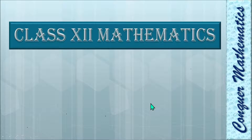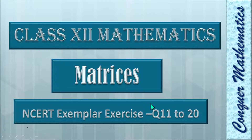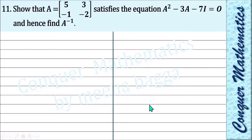Good morning 12th class. We started with NCERT Exemplar in matrices. We had 10 questions in the last class. Let's do 10 questions today. This is the first question: show that A equals this matrix satisfies the equation A squared minus 3A minus 7I equals null matrix, and hence find A inverse. Regular question — this was also in the NCERT book.